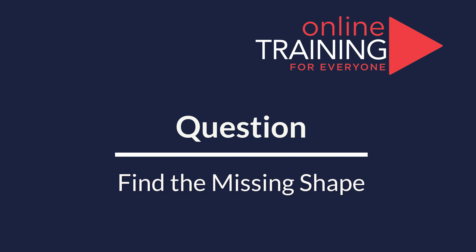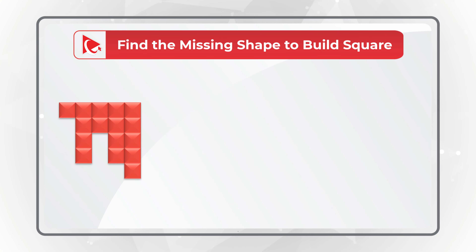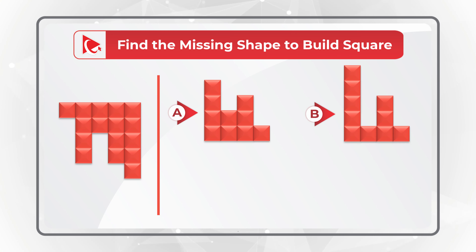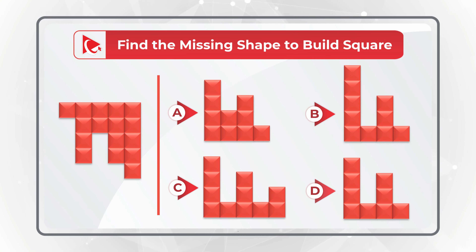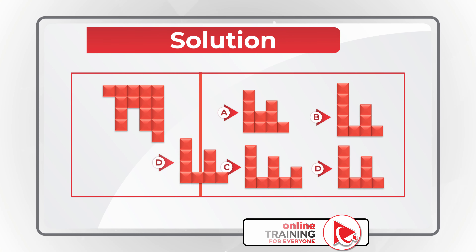Here's a very interesting question to test your spatial reasoning. You are presented with a partial square and you need to find the missing shape to build the full square. You have 4 different choices: A, B, C, and D. Take a close look to see if you can come up with the answer. The correct choice here is Choice D.